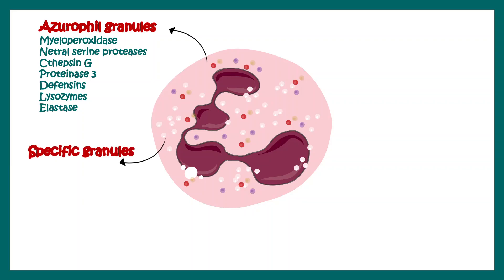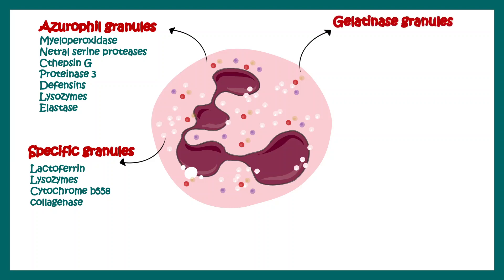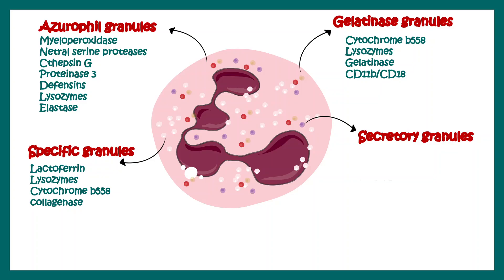There are specific granules which contain lactoferrin, lysozymes, and collagenase. Neutrophils also have gelatinous granules containing cytochrome B558, lysozymes, CD11b, and CD18, and secretory granules which contain CR1, alkaline phosphatase, and FMLPR. This describes the vivid heterogeneity of granules possessed by neutrophils, and all of these secretory contents have different functions.